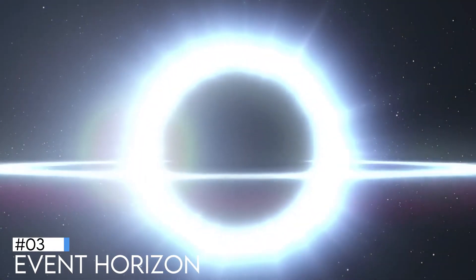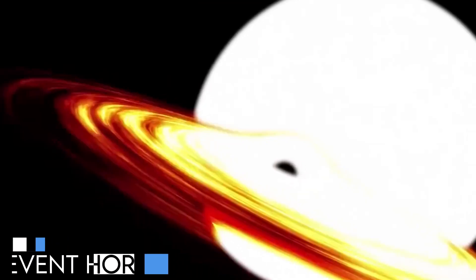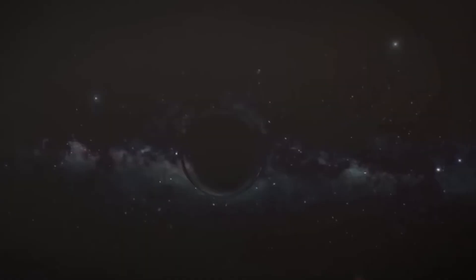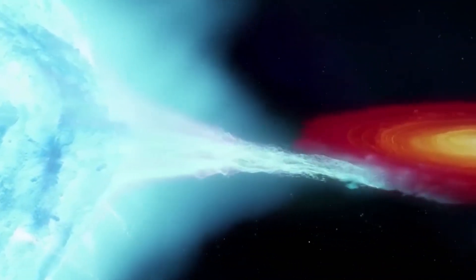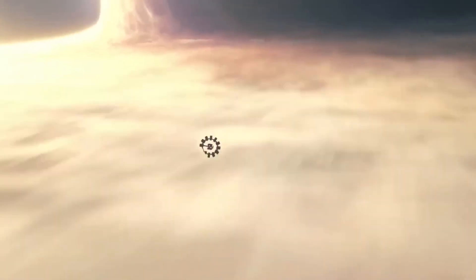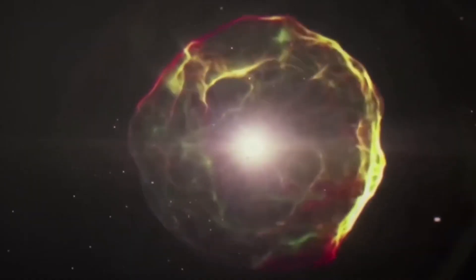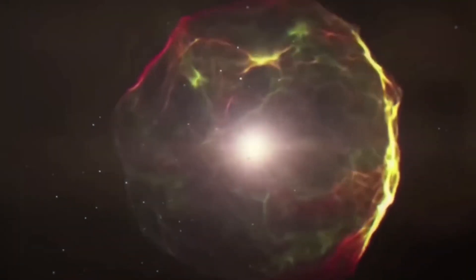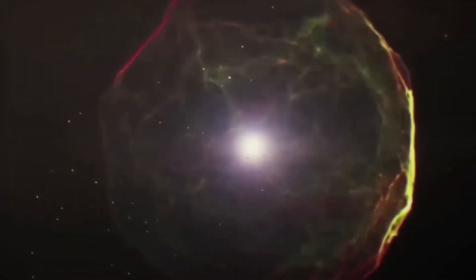Number 3. Event Horizon. The point of no return around a black hole is called the event horizon. This is the region where the gravity of the black hole overcomes the momentum of material spinning around it in the accretion disk. Once something crosses the event horizon, it is lost to the pull of the black hole.